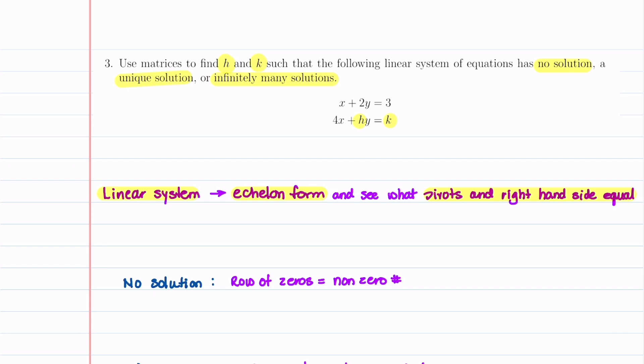We always want to begin this type of problem by taking our linear system of equations and putting it in an augmented matrix. Let's go ahead and do that. We have 1, 4, 2, H, and then on our right-hand side, we have 3 and K.